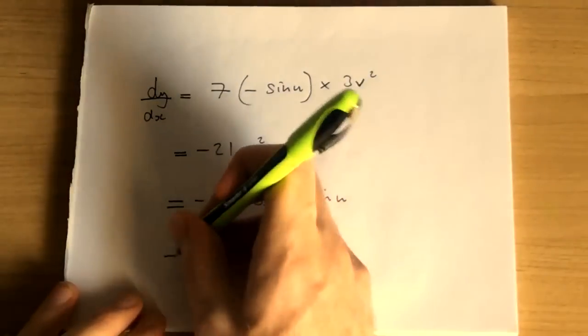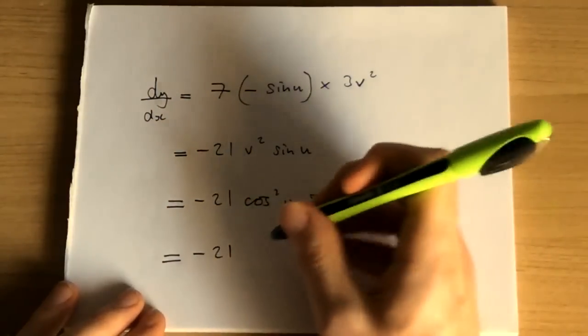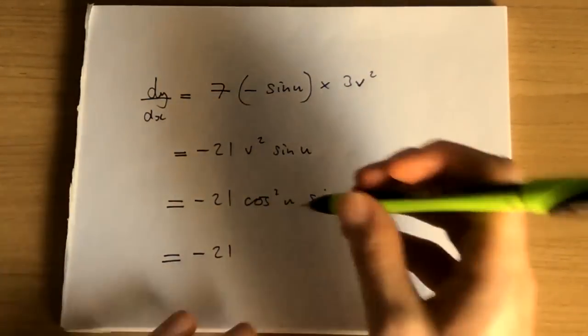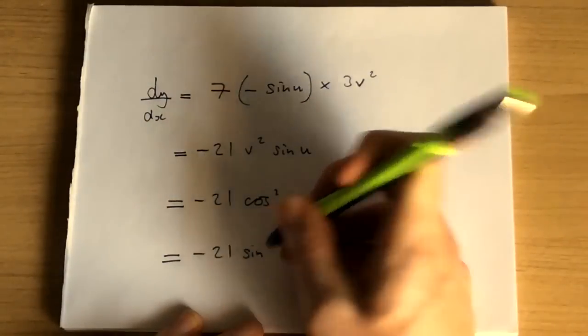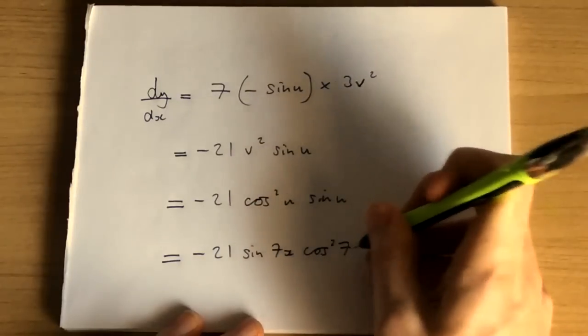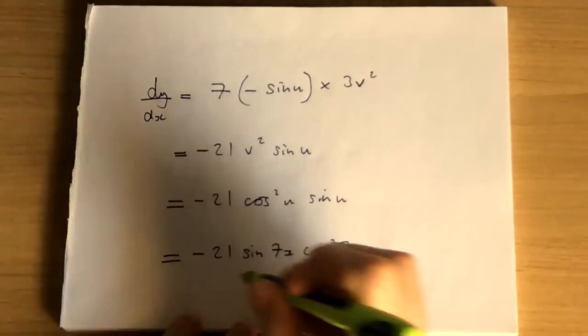And then rearranging, we have minus 21, and subbing in the 7x, which is u. We have minus 21 sin 7x cos squared 7x. And that's it.